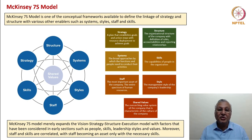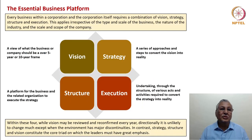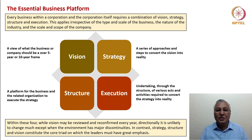We have considered several of these factors in earlier lectures. In this lecture, I will focus on vision, strategy, structure and execution — the other enablers having been already discussed and to be discussed in detail later. The essential business platform is vision, strategy, structure and execution. Every business within a corporation requires the framework of these four factors, irrespective of the type and scale of the business, the nature of the industry, and the scale and scope of the company.